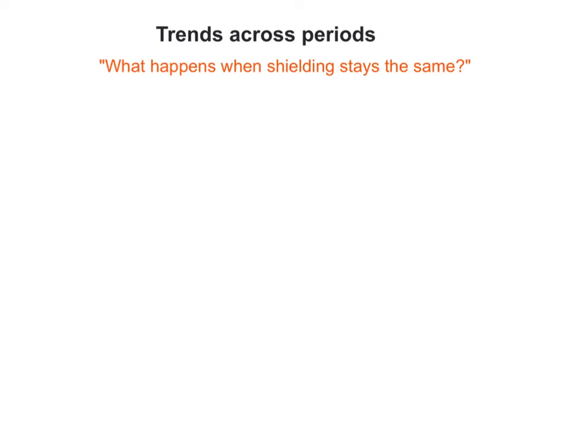Hello and welcome to this clip which looks at trends across periods in the periodic table — in other words, what happens when shielding stays the same between one element and another. In another clip we've looked at what happens when you go down a group, including group 2 and group 7. But it's also quite important to think about what happens as you go across a row, from one group to another but with the same level of shielding.